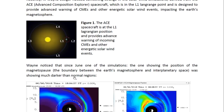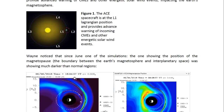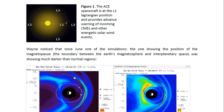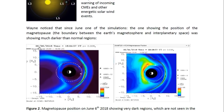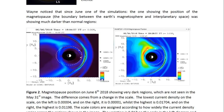Wayne noticed that since June, one of the simulations — the one showing the position of the magnetopause, which is the boundary between the Earth's magnetosphere and interplanetary space — was showing much darker than normal regions. We see that in this image from June 6, 2018. This white line here indicates the magnetopause position. This black and white circle is the Earth. The white part means this is the Earth side, so the Sun would be here and the solar wind comes from this side. This is the geosynchronous satellite orbit.